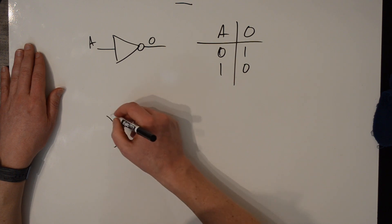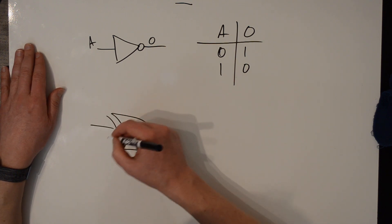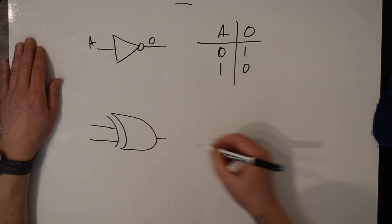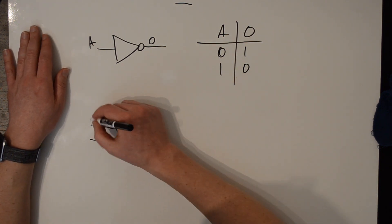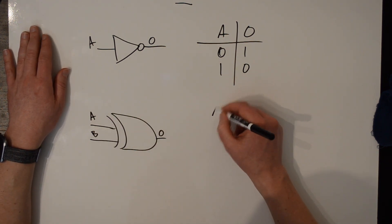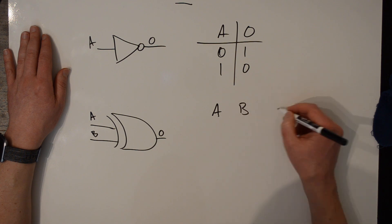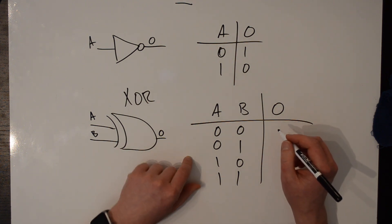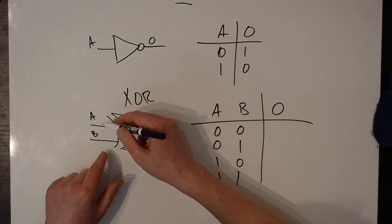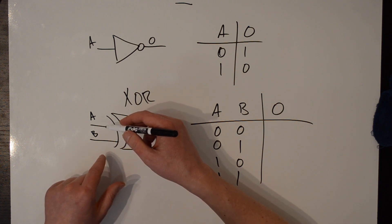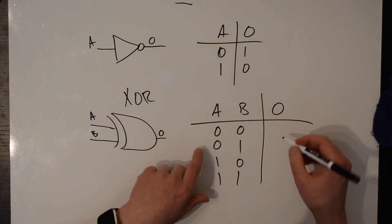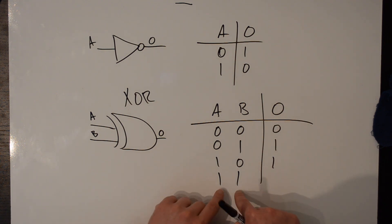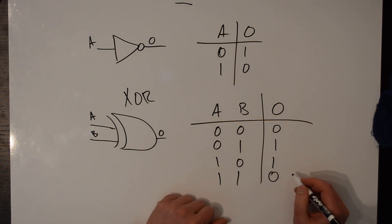And the last one that we'll talk about is the exclusive OR, or XOR. This one's a little more complicated, and you can actually make it using the other gates, but we'll just treat it as its own discrete thing. It also has two inputs and one output. The output of the XOR is true if either of the inputs is true, but not both. So the outputs are 0, 1, 1, 0 — when both inputs are true, the output is 0.